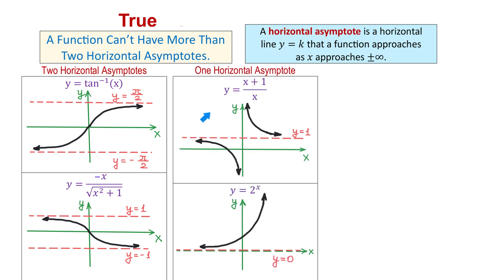Now here we have two functions that have only one horizontal asymptote. The first function is y equals x plus 1 over x. In this function, as x approaches positive infinity, the graph approaches the horizontal line y equals 1. And as x approaches negative infinity, the function also approaches y equals 1. So this function has only one horizontal asymptote, y equals 1.